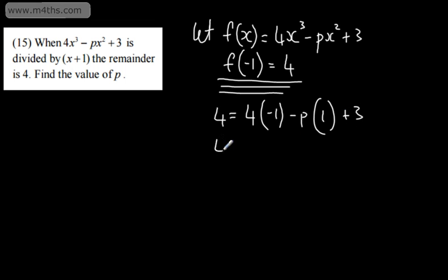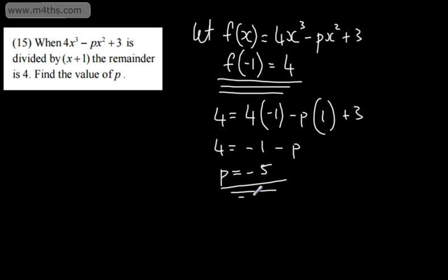Simplifying: 4 equals negative 4 plus 3 minus p, which gives negative 1 minus p. Therefore p equals negative 5, and we've found the value of p. I'm simply using the remainder theorem to state that f(-1) equals 4. Students may be tempted to use long division here, but since the coefficient of x squared is p — an unknown — the remainder theorem is far more efficient.